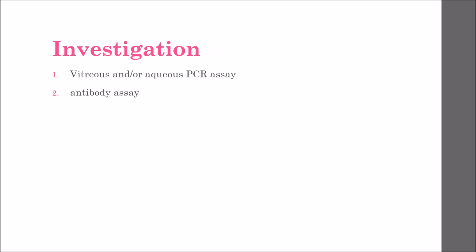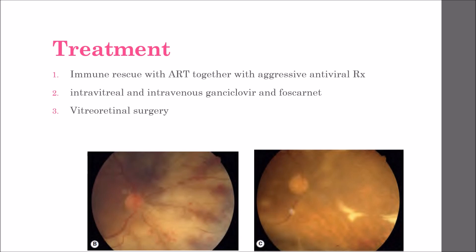For investigations, vitreous or aqueous PCR assay for viral DNA is used; antibody assay is not very effective. Treatment is immune rescue with antiretroviral treatment together with aggressive antiviral therapy, for example intravitreal and intravenous ganciclovir and foscarnet. Vitreoretinal surgery for retinal detachment yields poor results. Here we can see pre-treatment deep yellow-white infiltrates with well-defined borders, and post-treatment regression of lesions in the fundus.